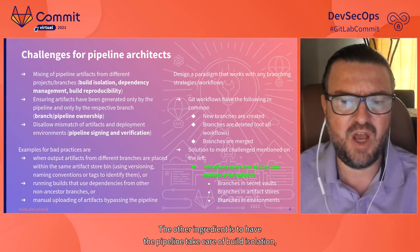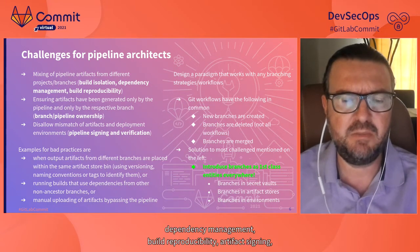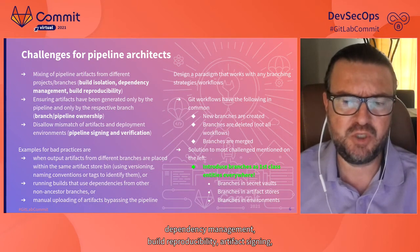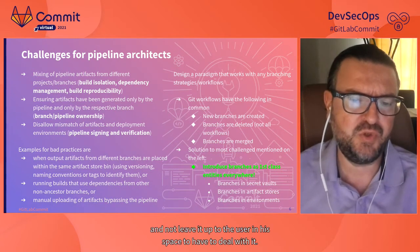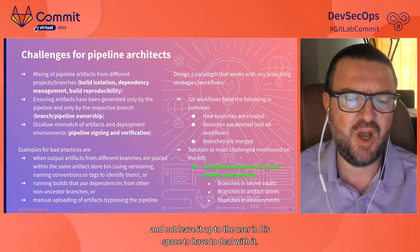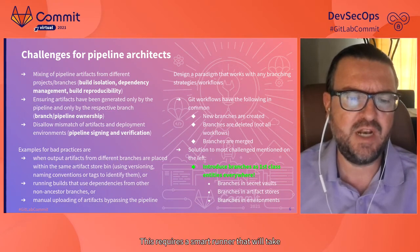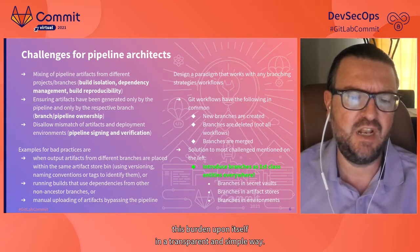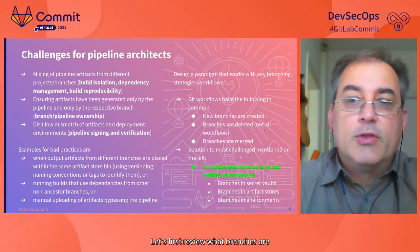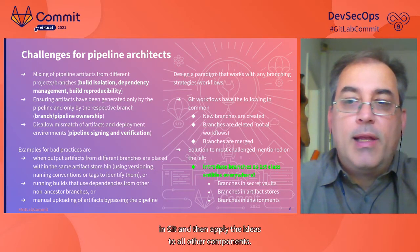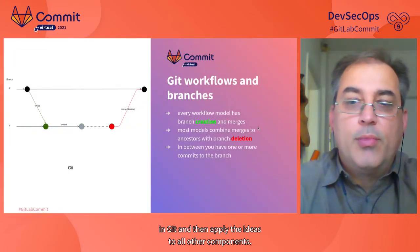The other ingredient is to have the pipeline take care of build isolation, dependency management, build reproducibility, and artifact signing — and not leave it up to the user in their secret space to deal with it. This requires a smart runner that will take this burden upon itself in a transparent and simple way.